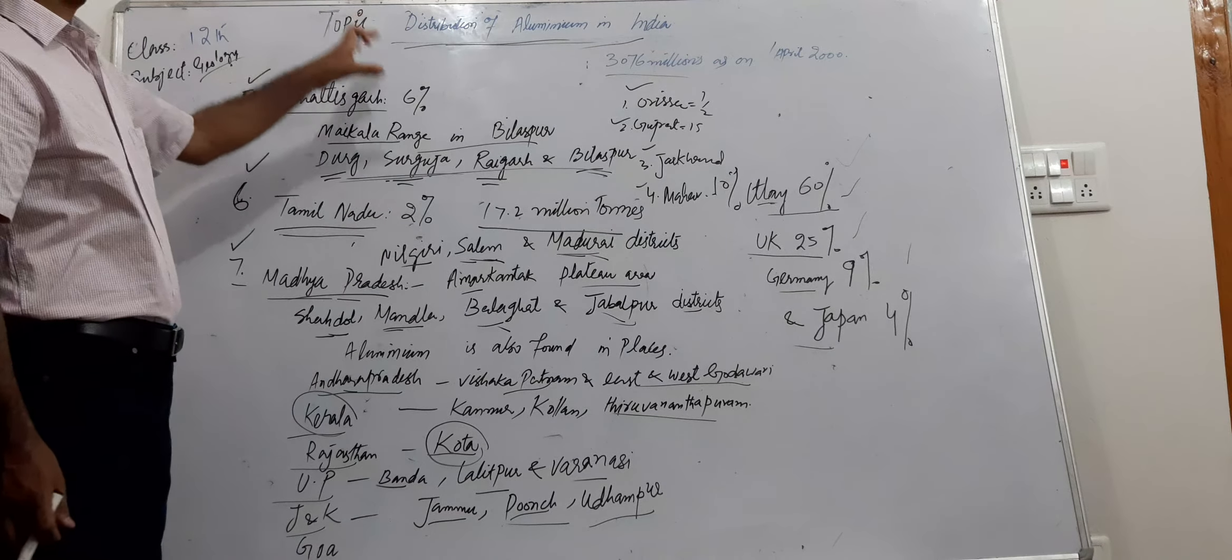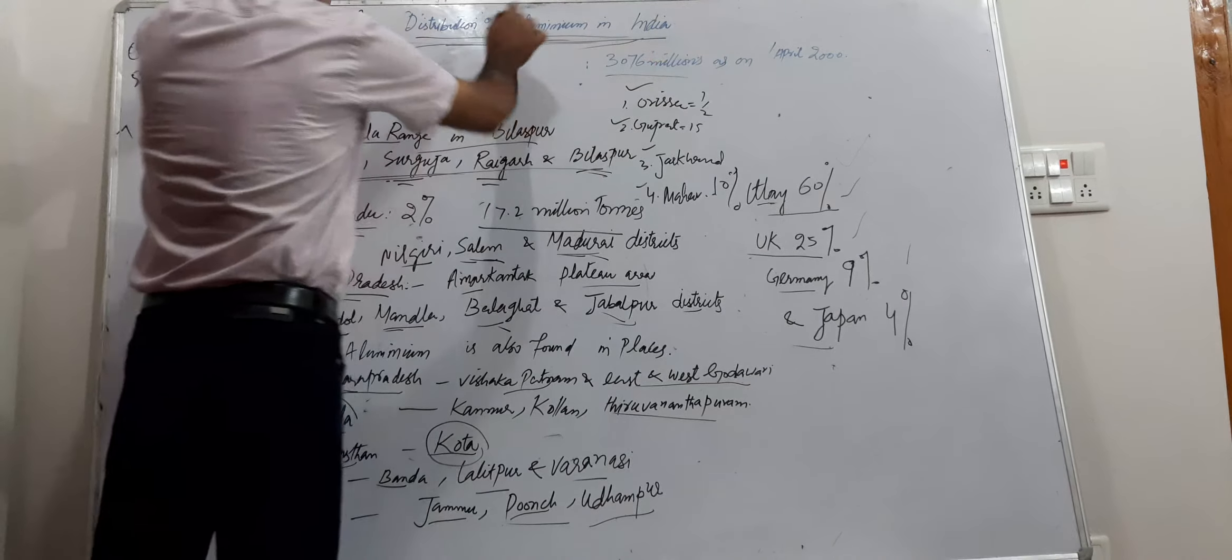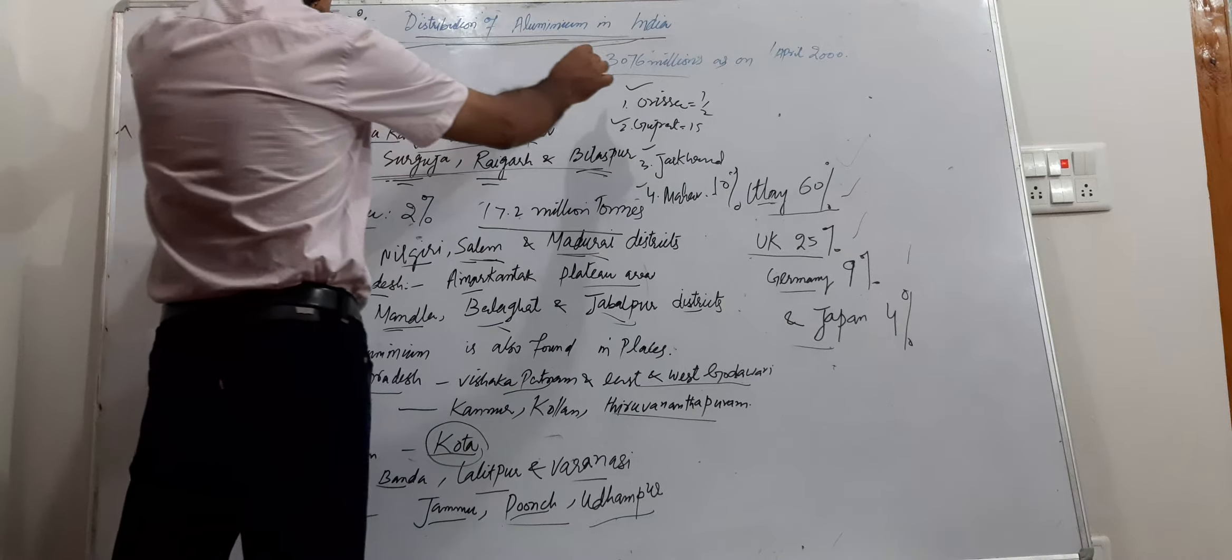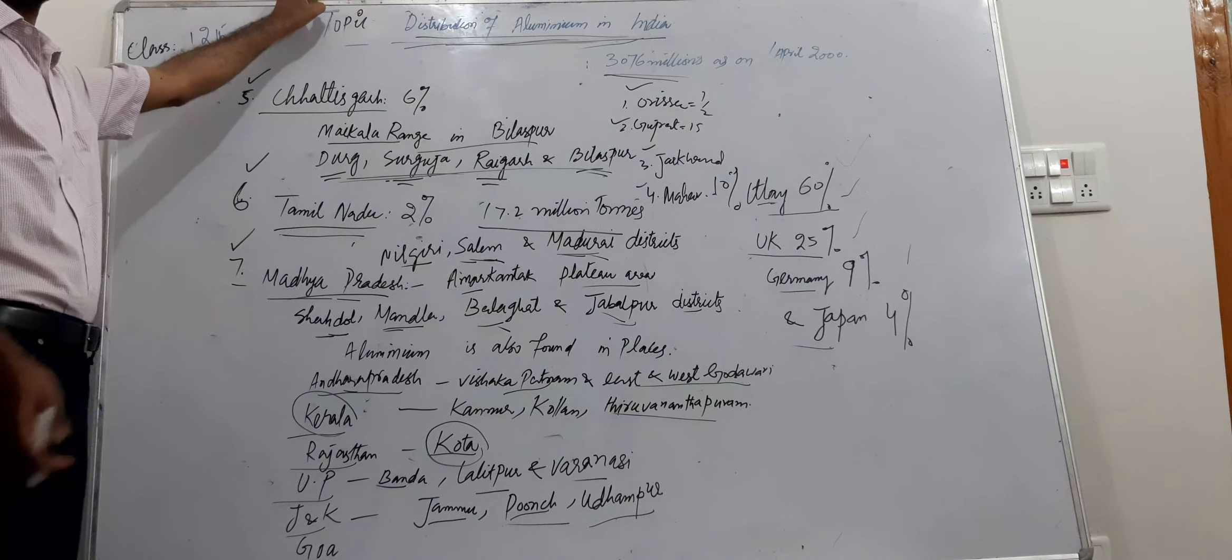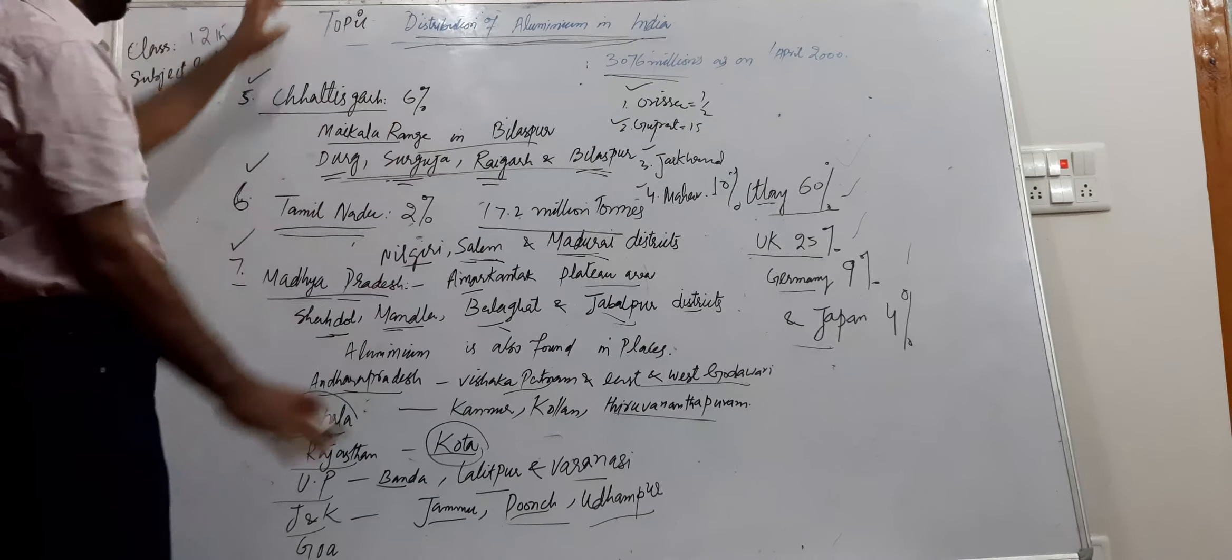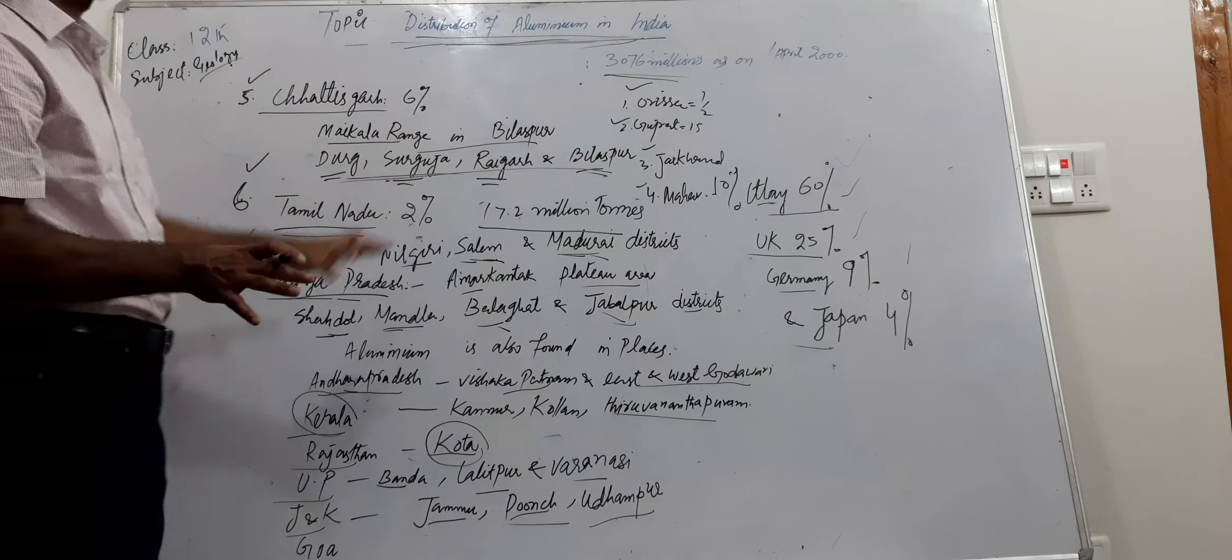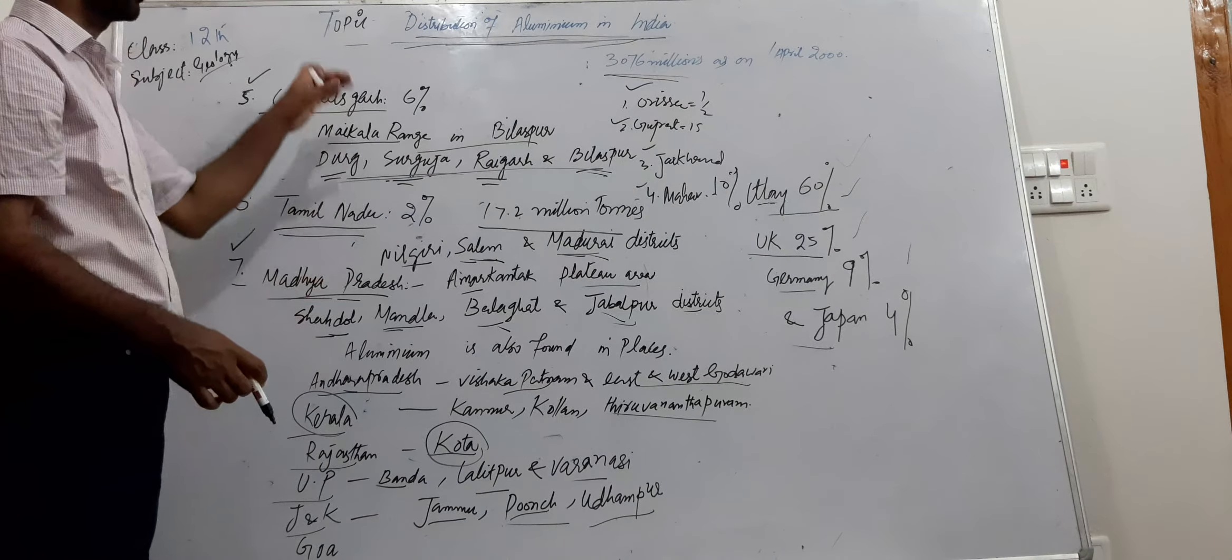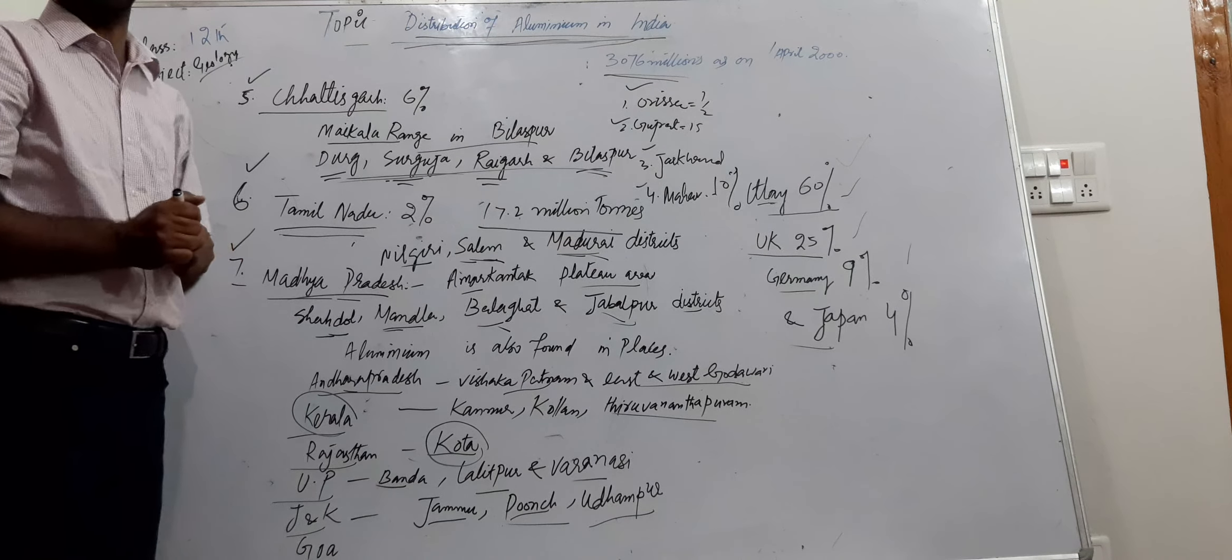So this was all about the distribution of aluminum in our country India, with an estimated 30,000 total from the first April data from the states. This was all about the distribution of aluminum in our country India. Thank you.